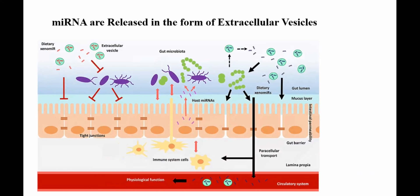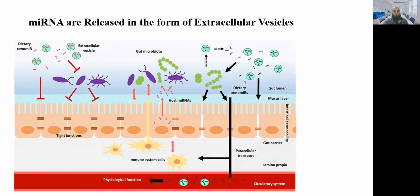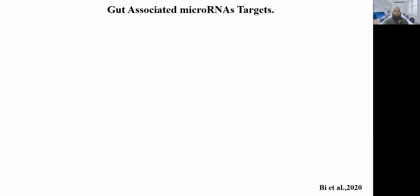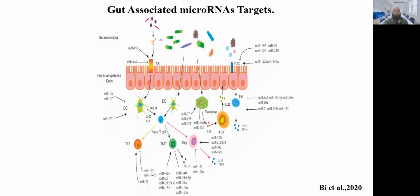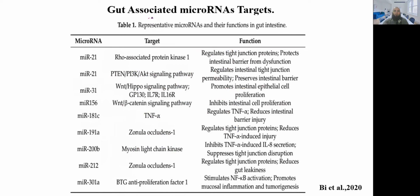Extracellular vesicles are released not only from gut microbiota but also from host cells, which release specific microRNA in the form of different vesicles. There are some specific gut-associated miRNA with specific targets. Research by Peng and co-workers demonstrated that gut microbiome-associated miRNA influences various inflammatory cells like dendritic cells, T cells, and macrophages. Some specific miRNA are associated with the gut and have specific targeting in the intestine.